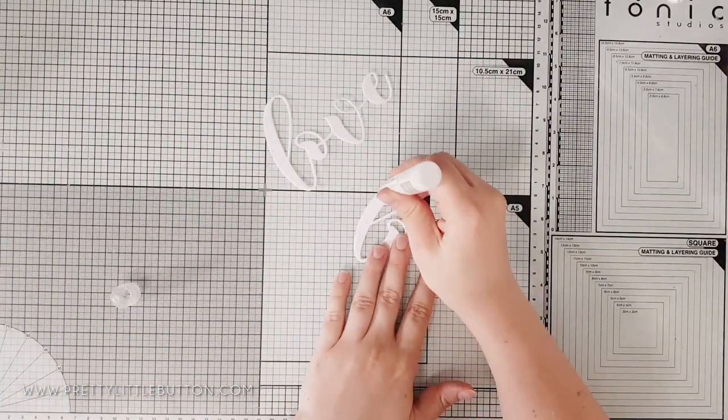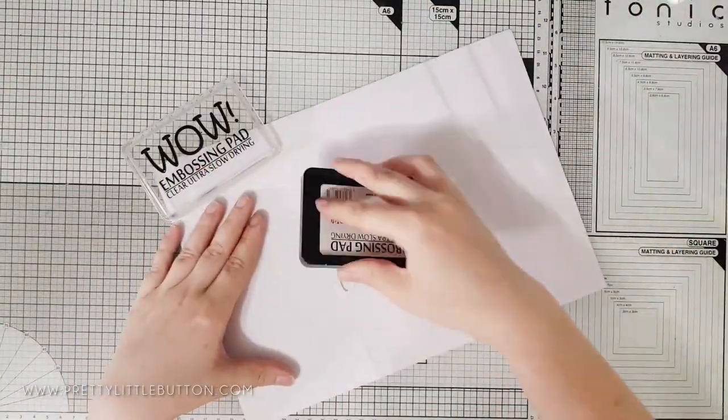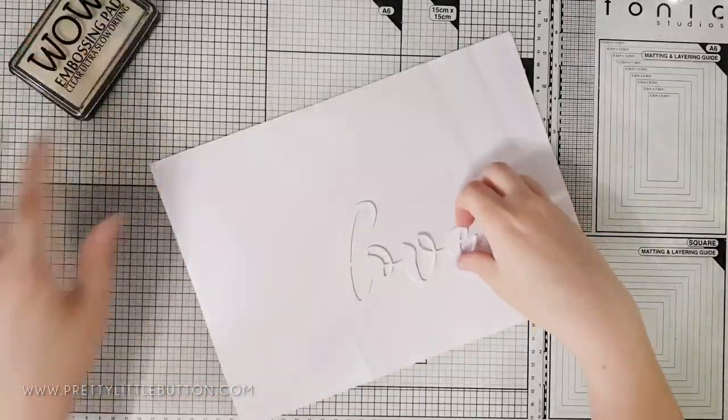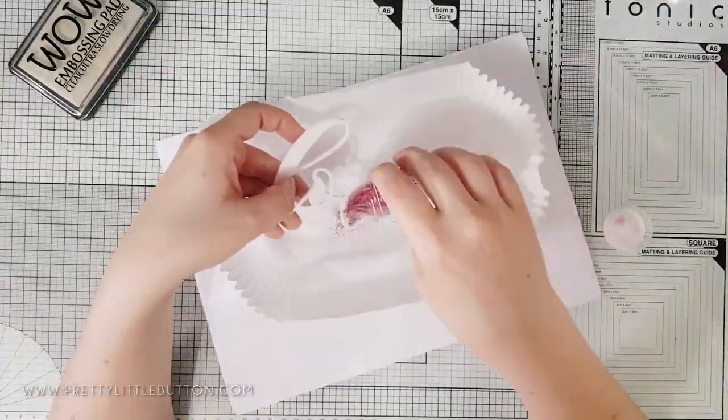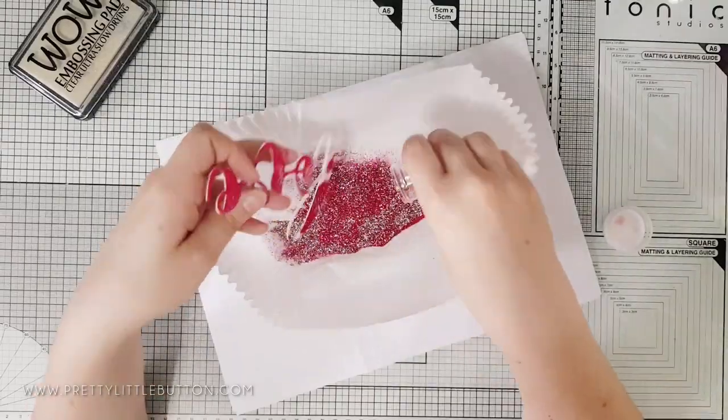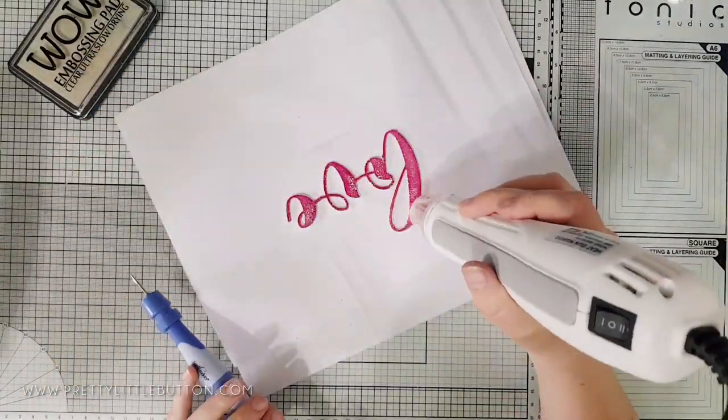I've die cut the also new Megalove die three times out of white cardstock and I've used Gina K connect glue to adhere the layers together. Next I'm taking my clear ultra slow dry embossing pad from Wow and smooshing this onto the layered die cut covering it in ink.